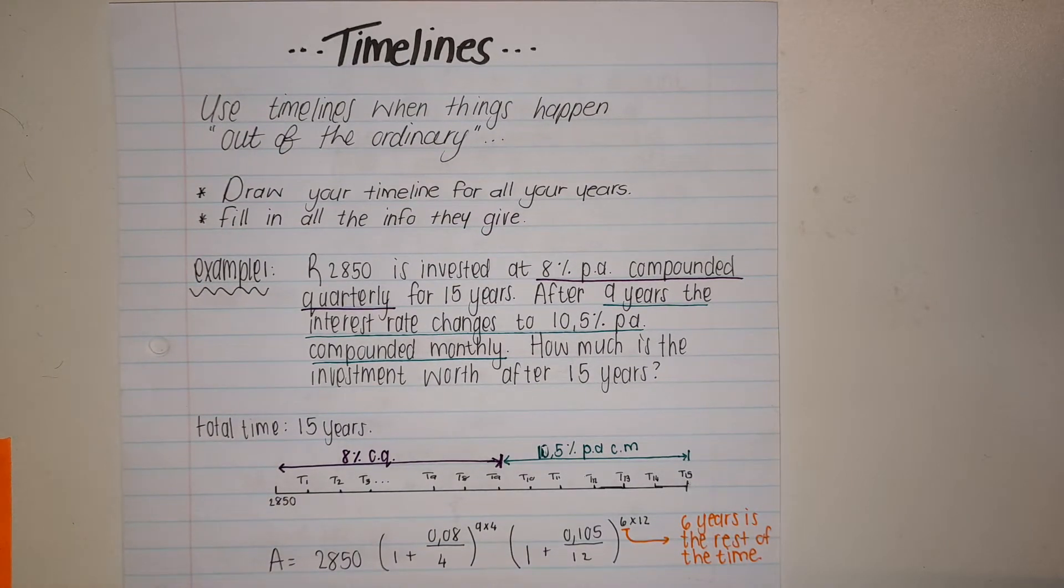We don't have to use it when it's a constant, like every two years this happens, but this is when either our interest rate changes in the middle of the period or when somebody deposits or withdraws money from their account.